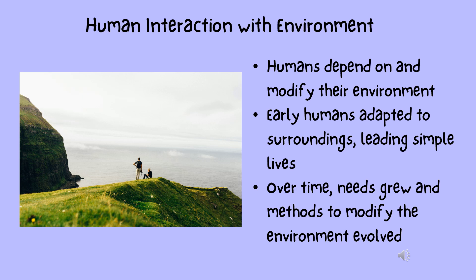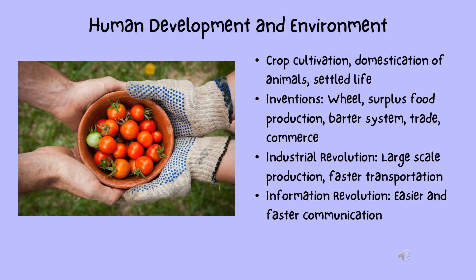Humans interact with and change the environment according to their needs. Early humans adapted to their surroundings, living simple lives and meeting their needs from nature. Over time, humans learned to grow crops, domesticate animals, and lead settled lives. They invented the wheel, produced surplus food, and started trading goods using the barter system. Trade and commerce developed, and the industrial revolution enabled large-scale production.